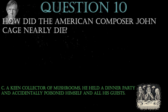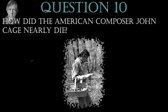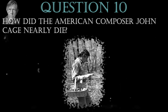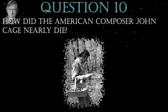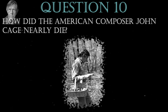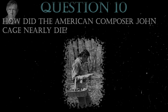John Cage was a lifelong devotee of wild mushrooms and later in life became something of an authority on fungi. He even gave popular lectures on fungi at the New School of Social Research in New York City. But back in 1954, he was a bit less of an expert and accidentally poisoned himself and some of his friends with a meal containing poisonous hellebore.